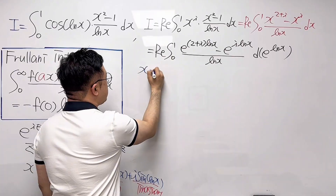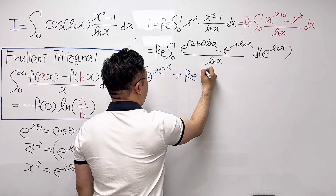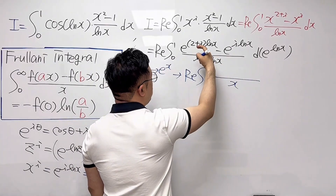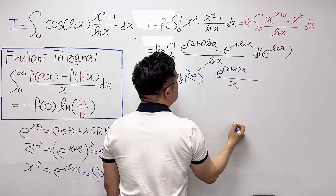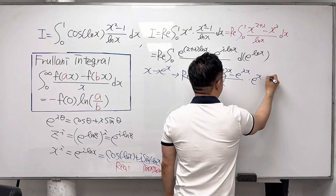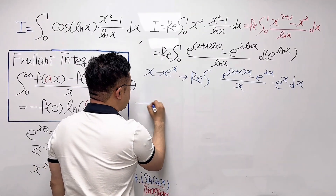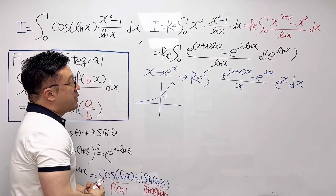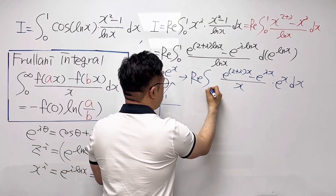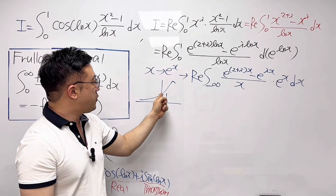From this, I'll substitute x as e^x. The lower and upper bounds will change. For the lower bound, as x was 0, e^x approaches 0 when x goes to negative infinity, so the lower bound becomes negative infinity. For the upper bound, x was 1, and e^x equals 1 when x equals 0, so the upper bound becomes 0. After substitution, the denominator becomes x, the numerator becomes e^((2+i)x) minus e^(ix), and dx becomes e^x dx.